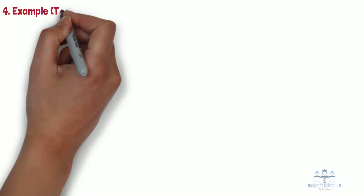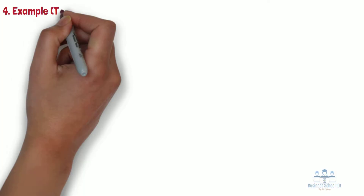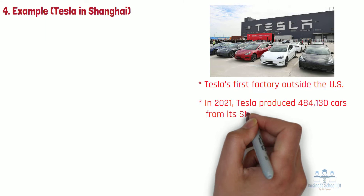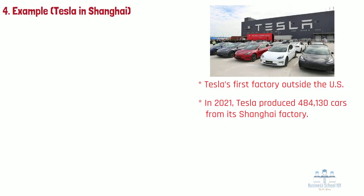Section 4: Example — Tesla in Shanghai. Tesla Giga Shanghai is a factory in Shanghai, China, wholly owned by Tesla Inc. It is Tesla's first factory outside the US. In 2021, Tesla produced 484,130 cars from its Shanghai factory. Let's use the OLI model to understand why Elon Musk wants to build its first foreign factory in China.